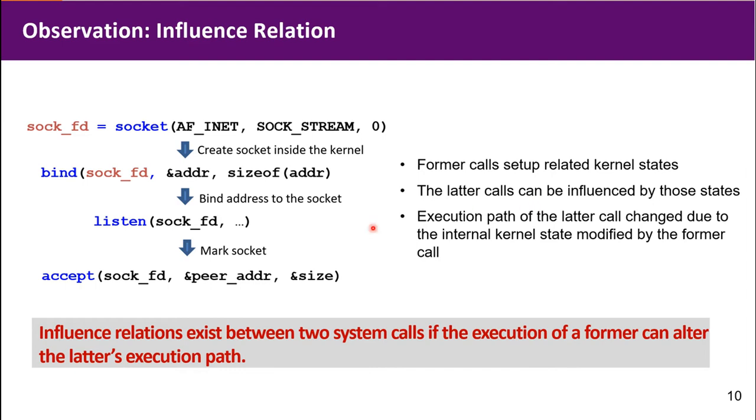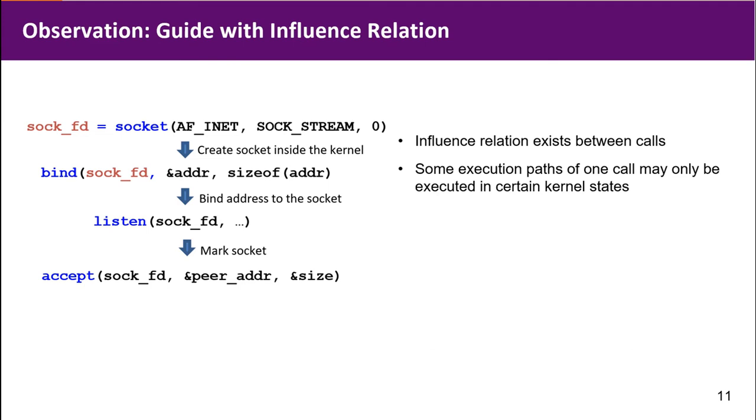Therefore, we can see a basic fact is that influence relations exist between two calls if execution of a former call can alter the latter's execution path. Furthermore, we can see that execution path of one call may only be executed in certain kernel states.